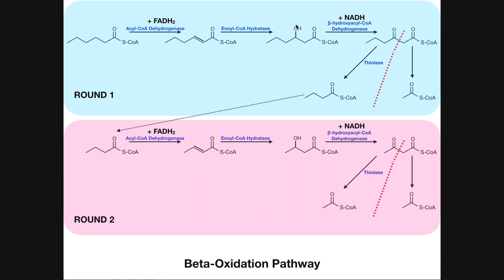The second enzyme, enoyl CoA hydratase, hydrates this double bond to add a hydroxyl group. Then the hydroxyl group is oxidized into a ketone through the action of the third enzyme, beta-hydroxyacyl CoA dehydrogenase. The significance of the third enzyme is that we gain an NADH, produced by the oxidation of this hydroxyl group into the ketone. So within the first three enzymes of each round of beta-oxidation, we get one FADH2 and one NADH, and the molecule is still six carbons.